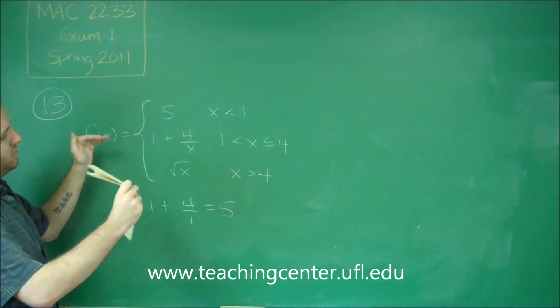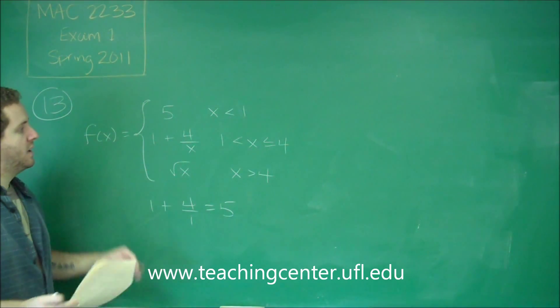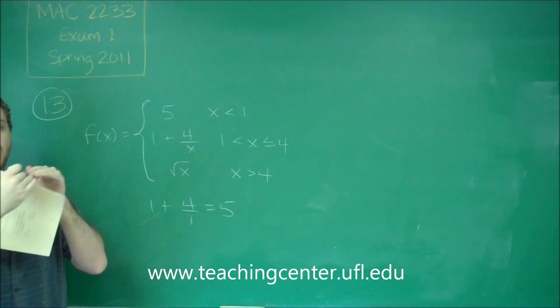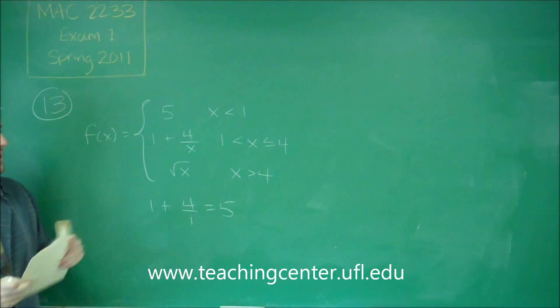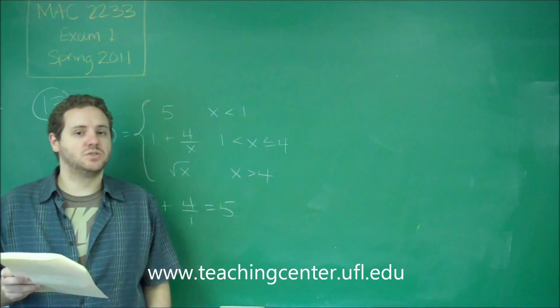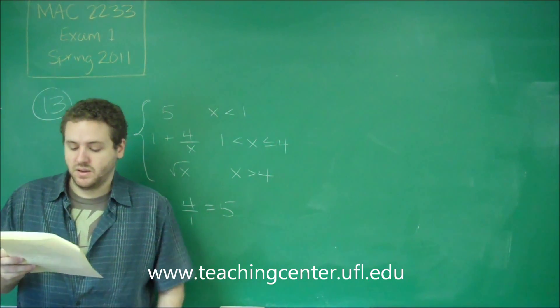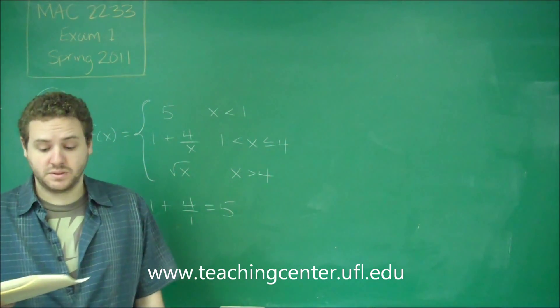So both from the left and the right at x equals 1, these pieces meet at the value, y value of 5. However, it's an open circle there because neither of them are equal to. So having one removable discontinuity, that is true for this, because we don't have the possibility of one anywhere else.